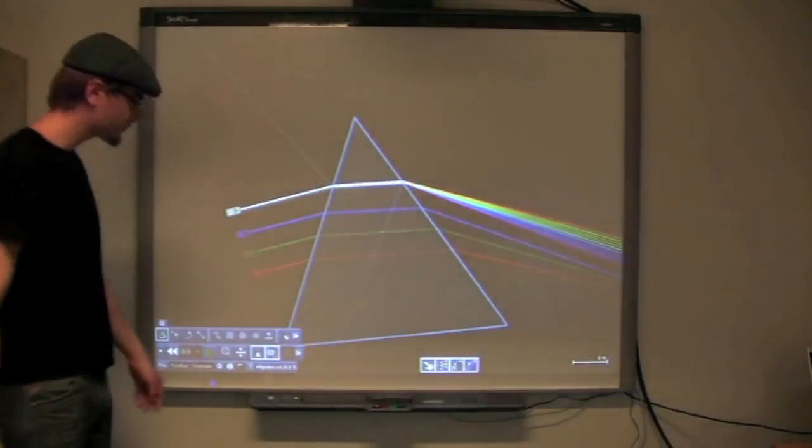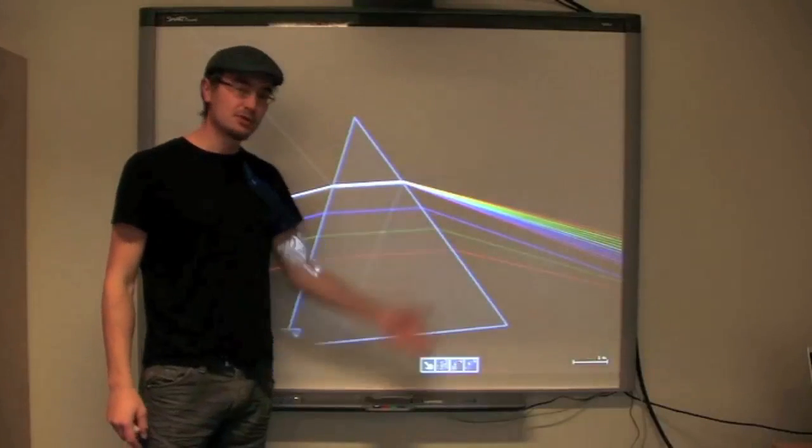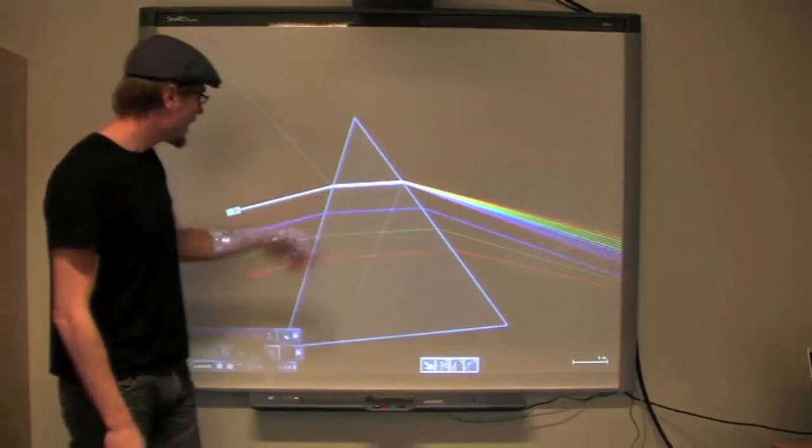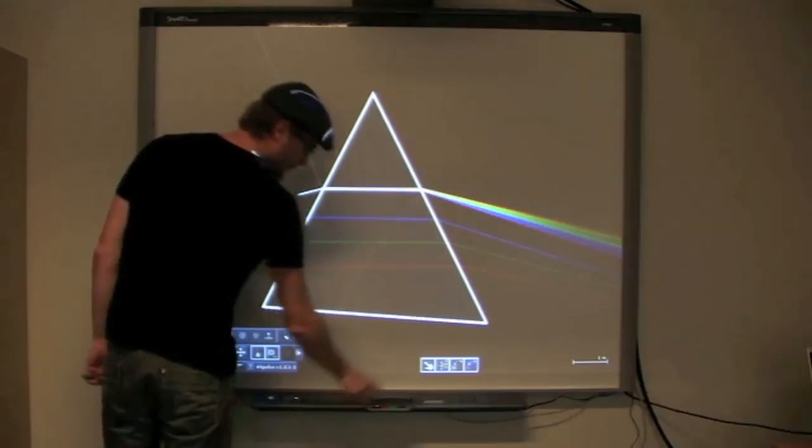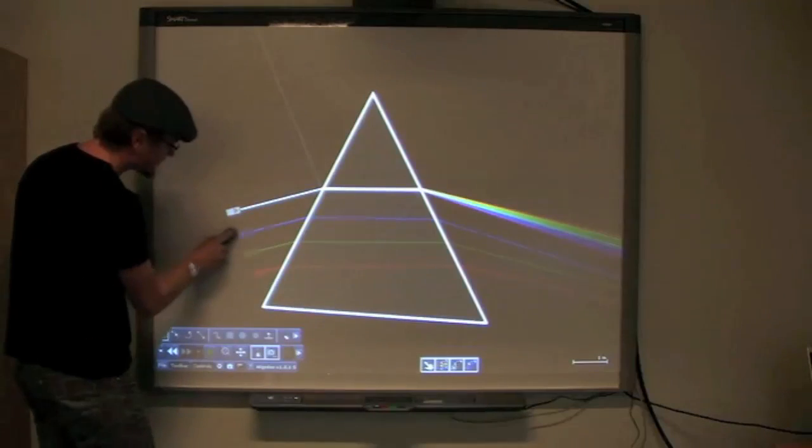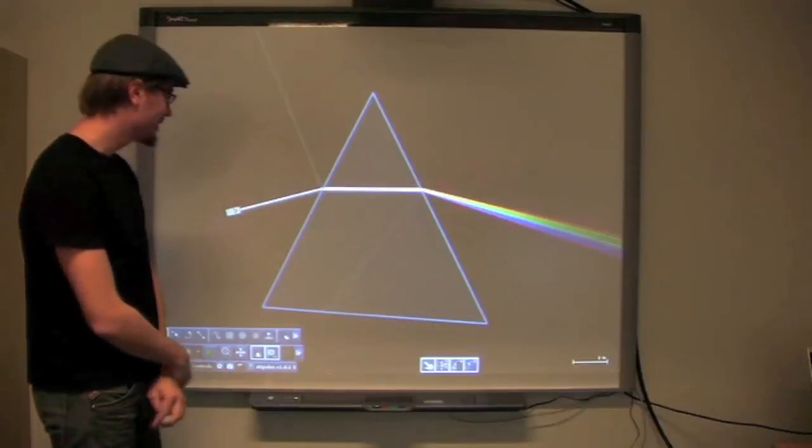Now notice that the different colors of light refract differently because there are different wavelengths. And the white light there makes a nice rainbow. So we'll just get rid of these lasers here. And we're left with this nice Pink Floyd Dark Side of the Moon cover.